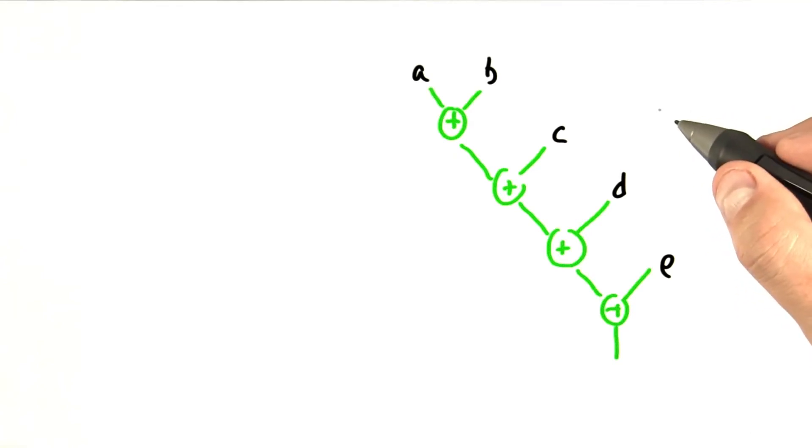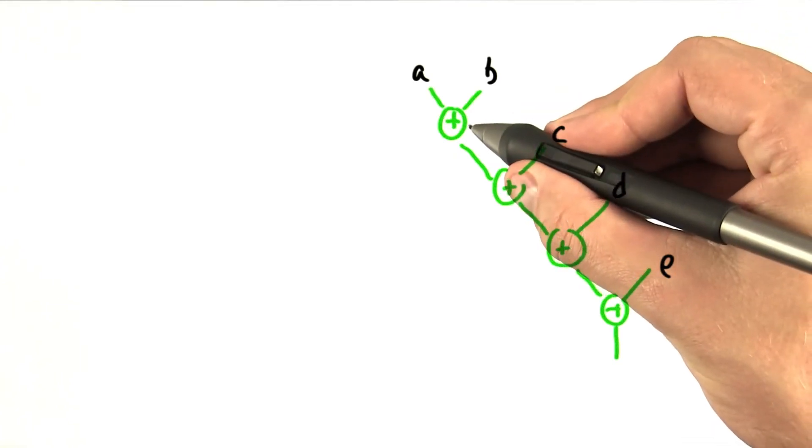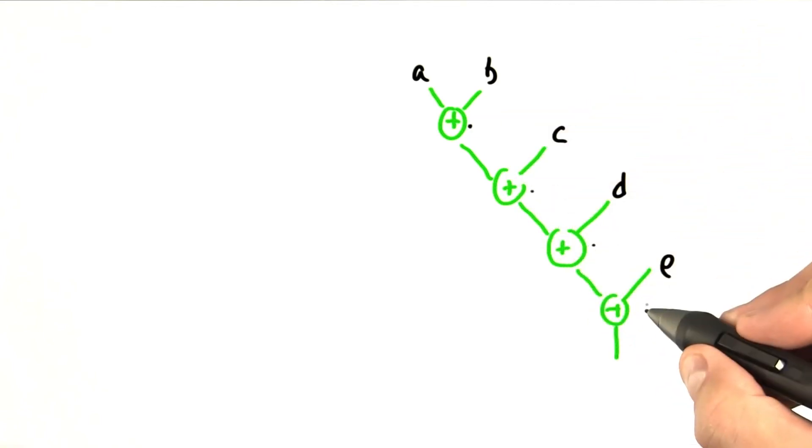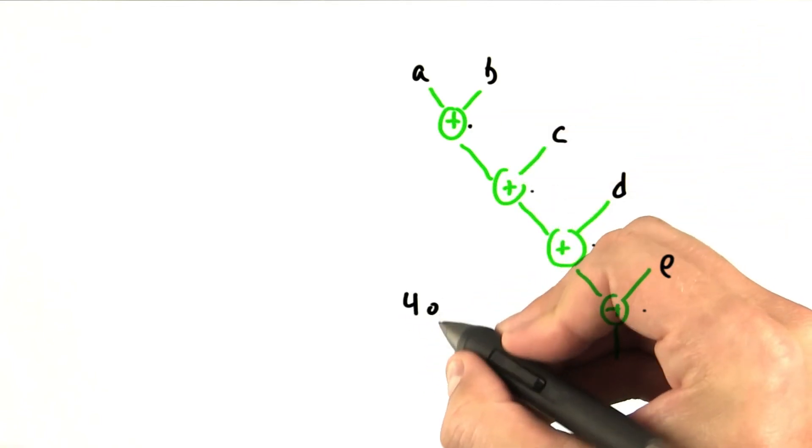First, how many operations does it take to perform this serial reduction? So we can just count the operations, one, two, three, four. So four operations, that's our amount of work.